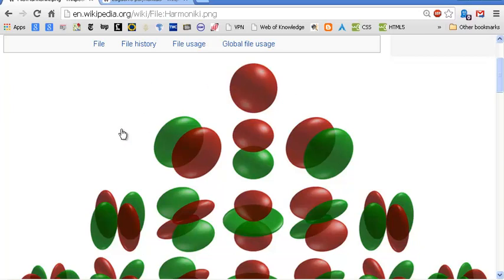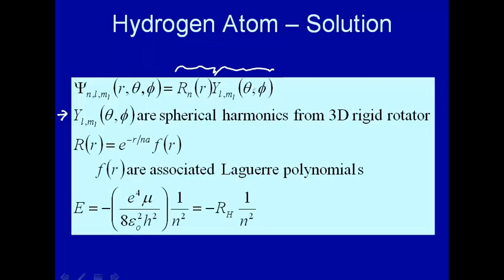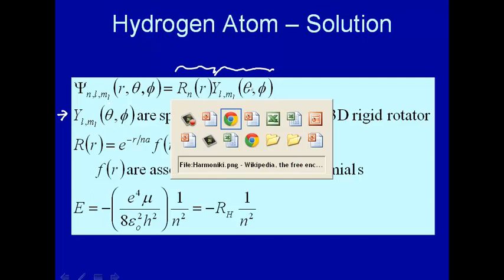Alright, so for this, what we have, these rows are characterized by different values of L, and the columns are characterized by different values of M sub L. So L equals 0, you can only have one value of M sub L, and this is what the shape of that looks like. Now when I say shape, what do we actually mean by that? Well, let's actually be more specific about what we're talking about. What we have is these spherical harmonics are a function of these two angles, which will essentially give you the latitude and longitude on the surface of a sphere.